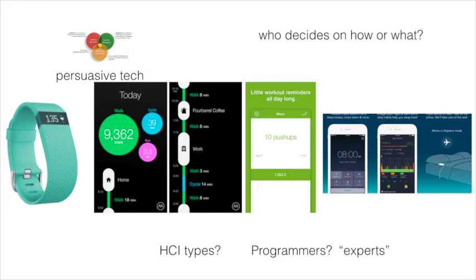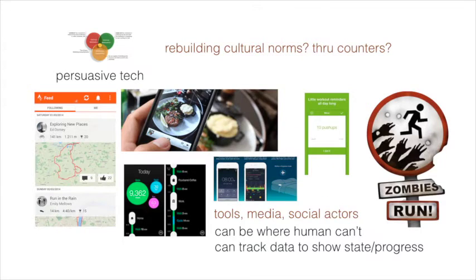That brings us to tracking, because these applications need data. That's the main way that persuasive technology works right now, which is actually pretty naive at this stage — it's lots of counting or comparison. For instance, there's a lot of calorie counting, step counting, pounds counting, heartbeats counting. The comparison side is things like 'people like you do this too, so why don't you?' — especially around shopping.